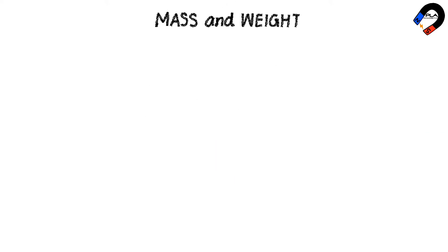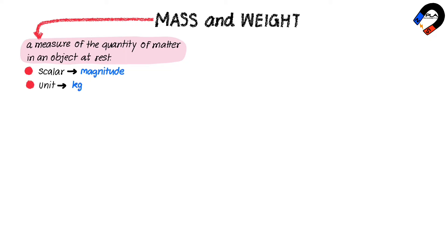Mass and weight. Mass is a measure of the quantity of matter in an object at rest. Mass is a scalar quantity that has magnitude only. Its unit is kilogram. Mass is constant anywhere in the universe.